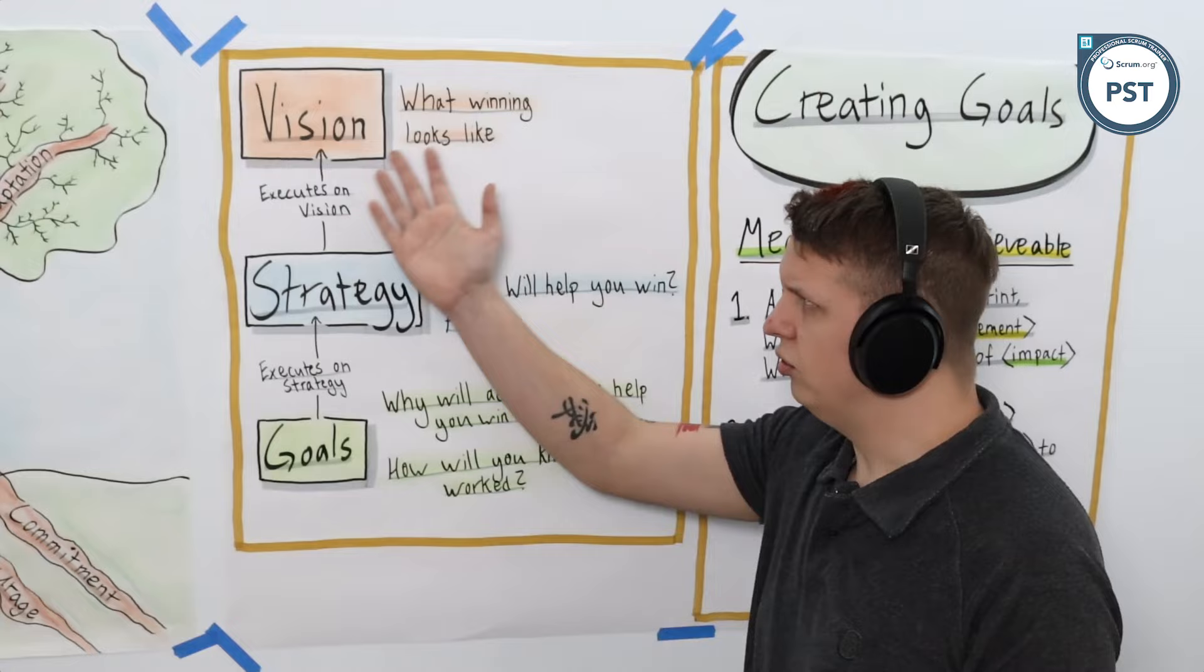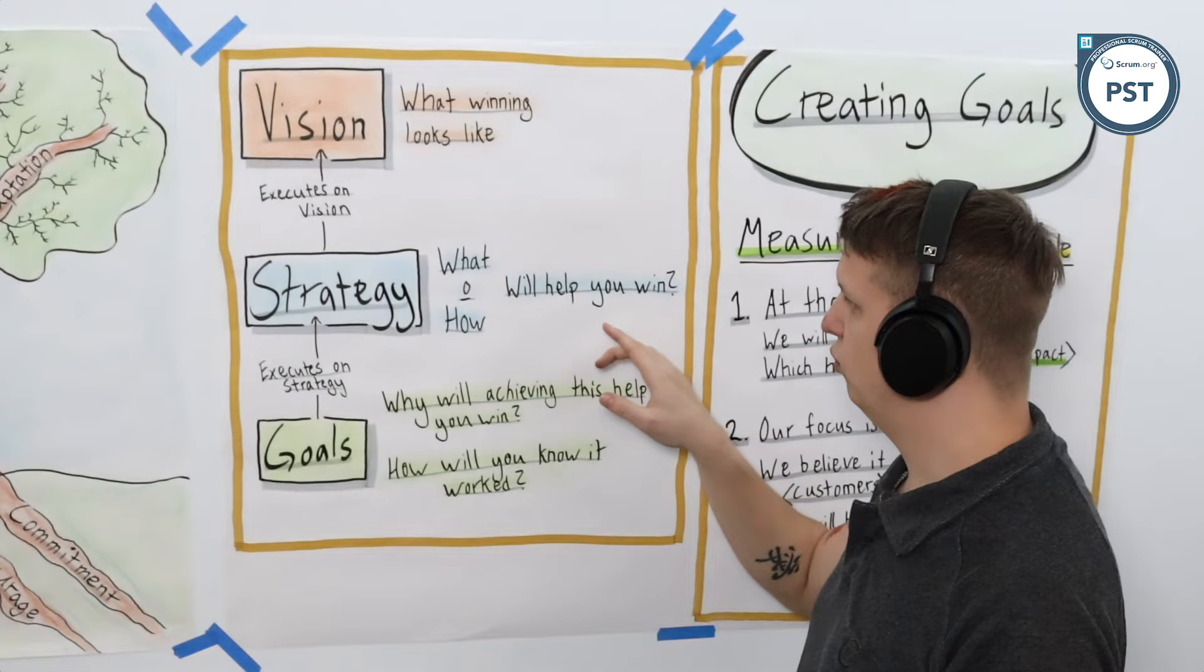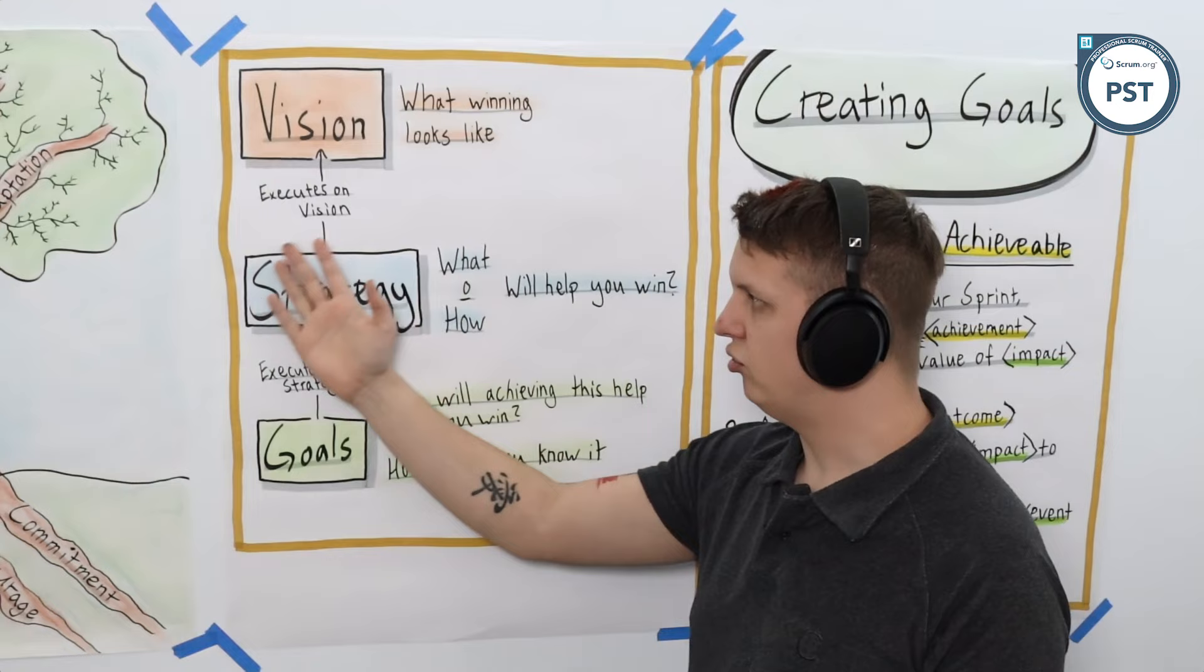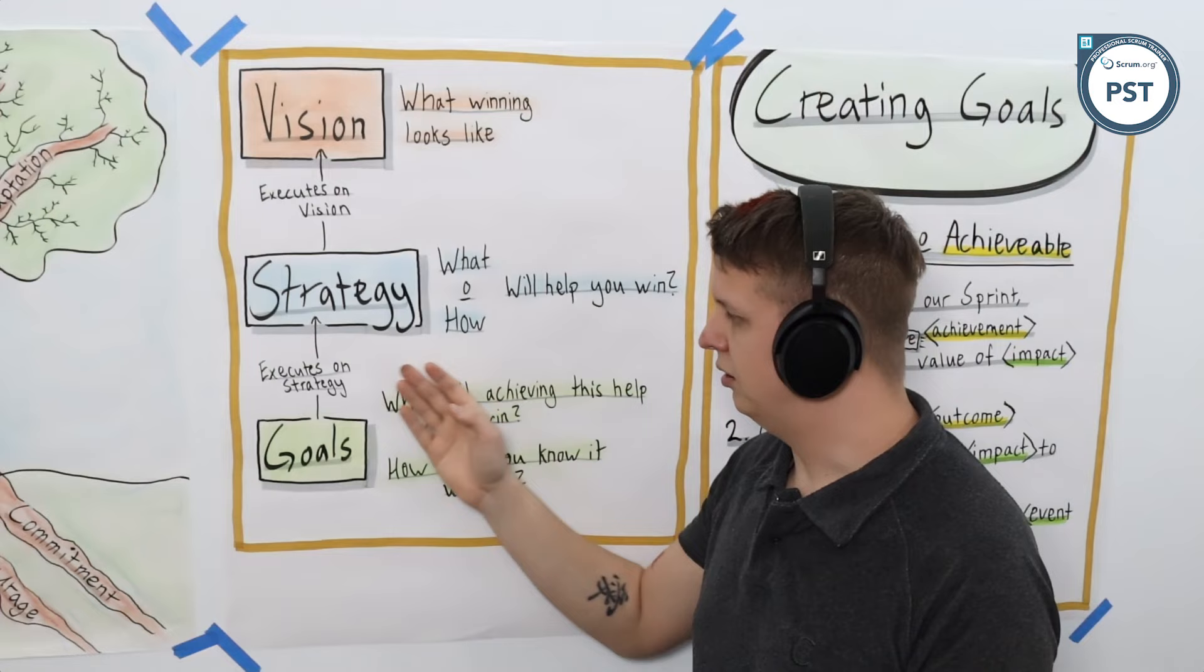Additionally, in order to get to your vision, because your vision could be many years away or a lifetime away, you should have a strategy. The strategy tells you what will help us win and how will it help us win. That is what a strategy should answer. It is the thing that says this is the thing that separates us from everyone else that enables us to achieve our vision.